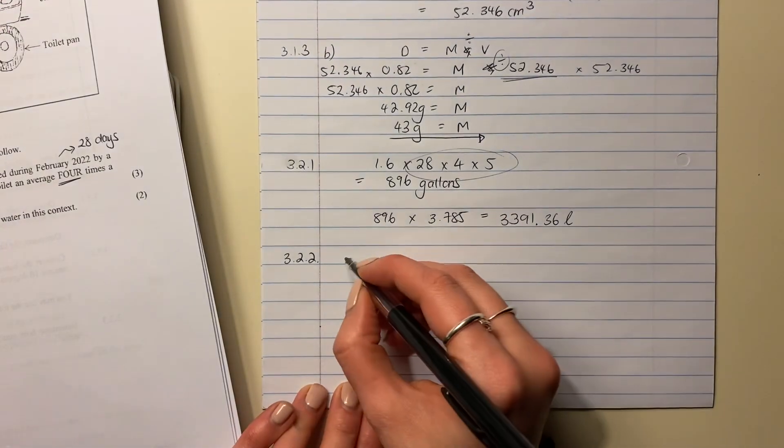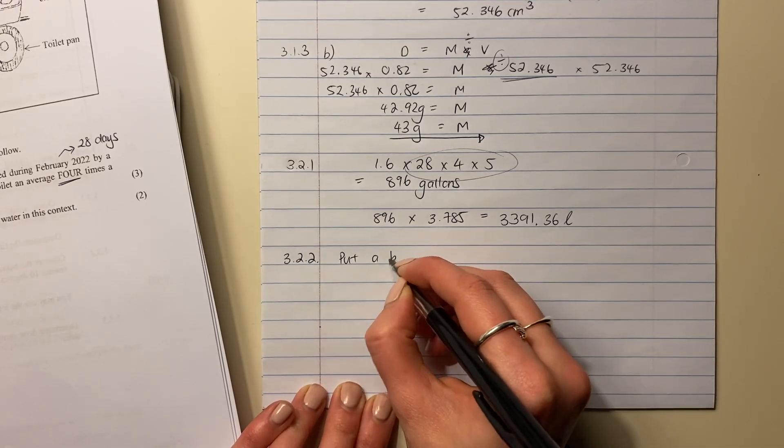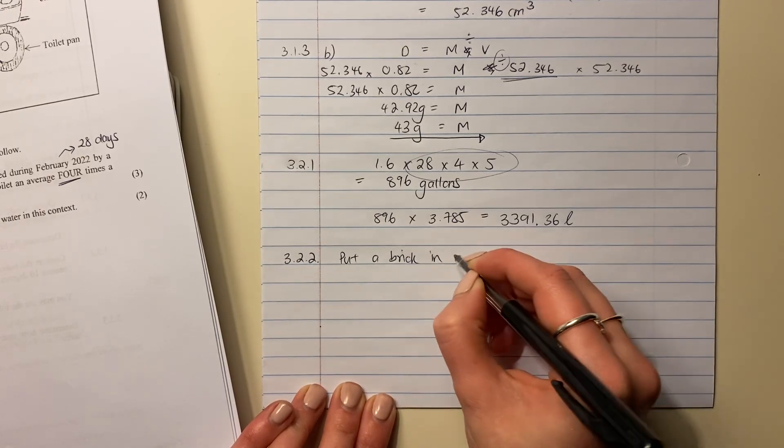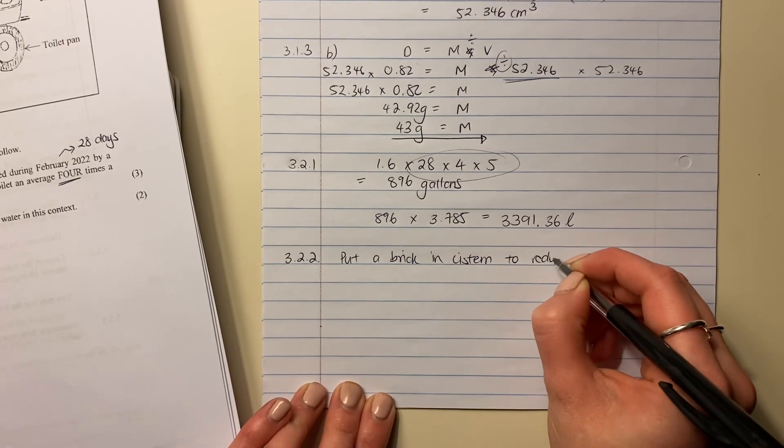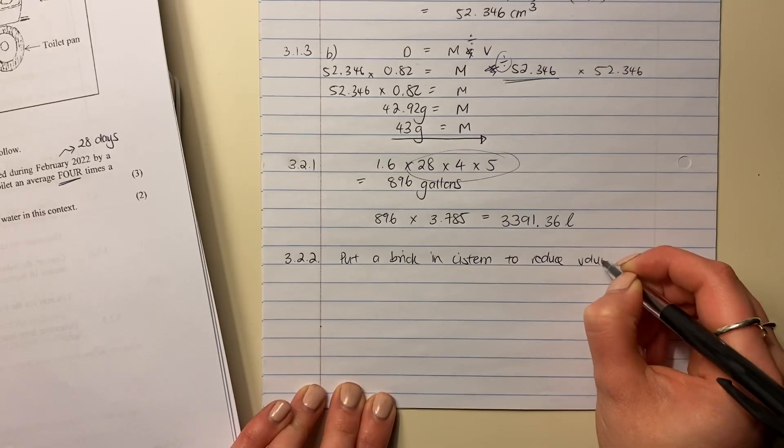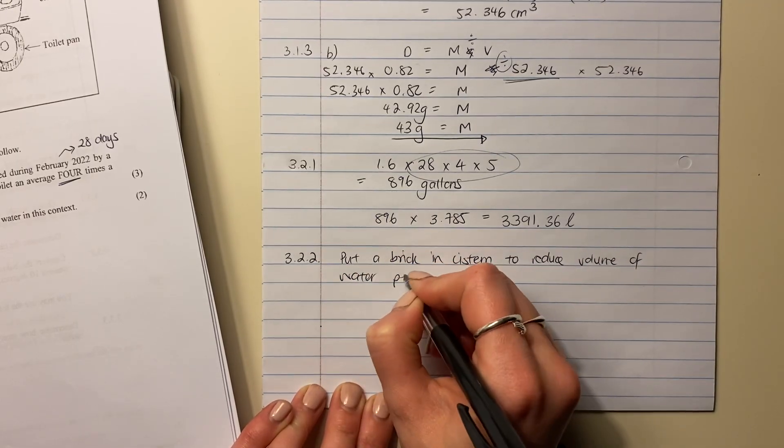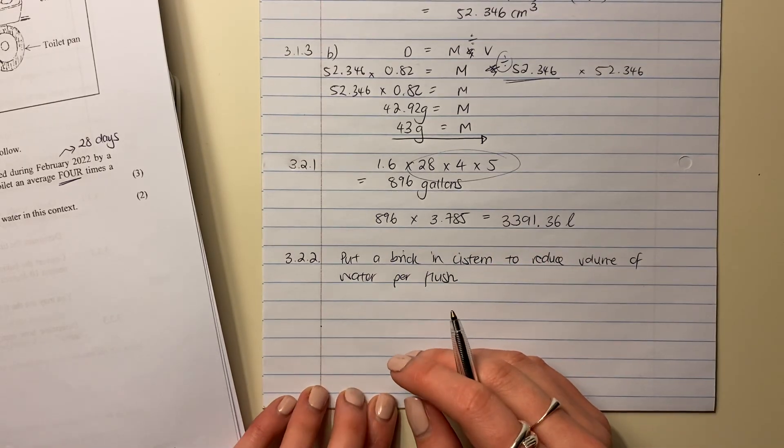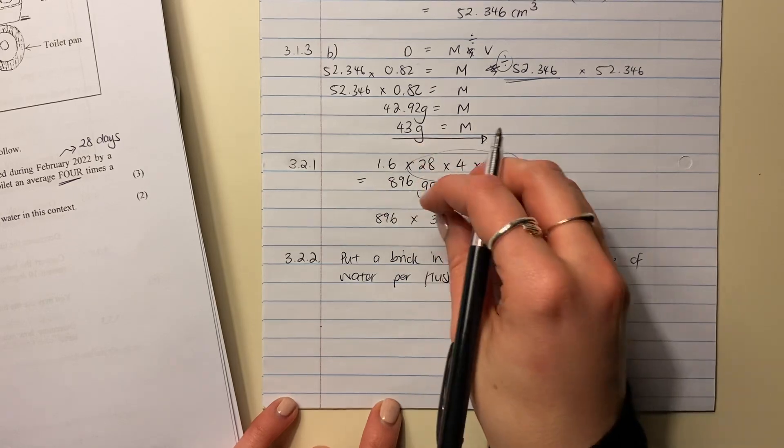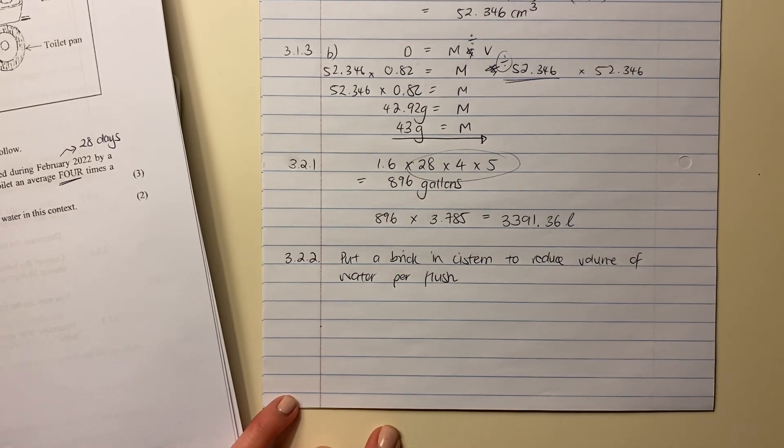I'm just going to say, put a brick in cistern to reduce volume of water per flush. And that's us done for this question. So kind of a calculation question followed by a common sense question. Let's go to the next one.